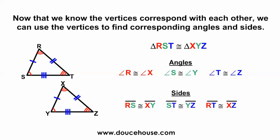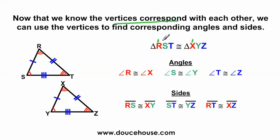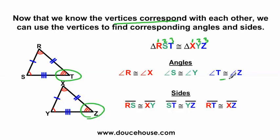Now that we know the vertices correspond with each other, we can use the vertices to find the corresponding angles and sides. Vertex R represents angle R, and vertex X represents angle X. Since this vertex and this vertex match up, these two angles are congruent. Since S comes second and Y comes second, angle S and angle Y are congruent. And since T comes third and Z comes third, angle T and angle Z are congruent. So the order of the letters is really important: angle R and angle X are congruent, angle S and angle Y are congruent, angle T and angle Z are congruent.